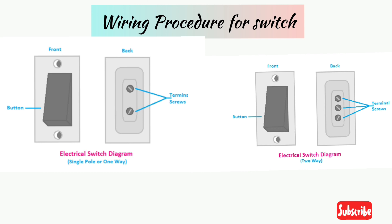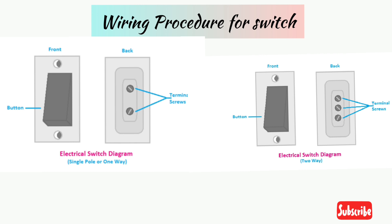So let's see the electrical switch wiring diagram and connection. Here we will see the connection of both types of switches: one-way and two-way. The one-way switch can be seen everywhere for lighting, switchboards, power sockets, etc. The two-way switches are mainly used in staircase lighting, hostels, etc.